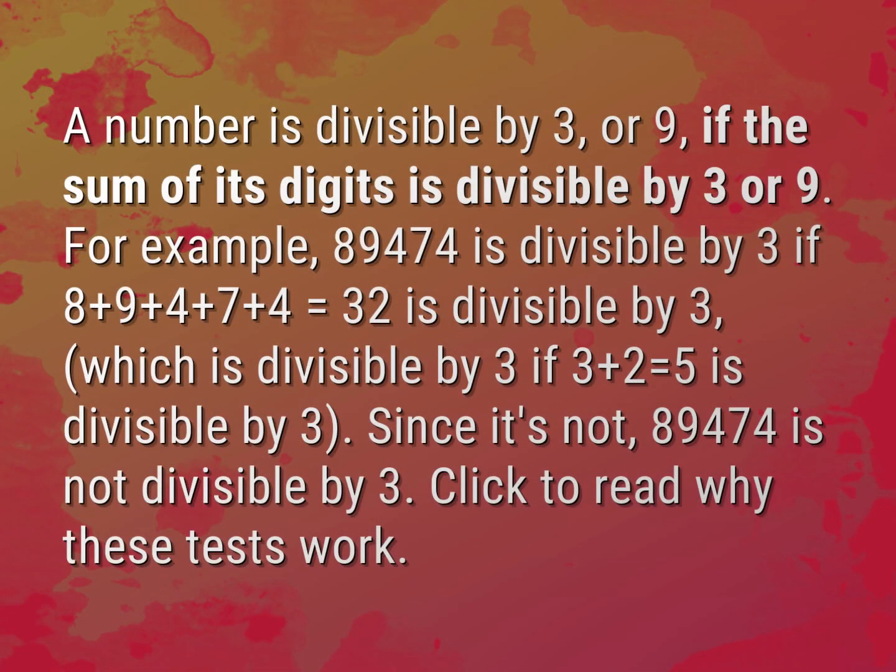A number is divisible by 3 or 9 if the sum of its digits is divisible by 3 or 9. For example,